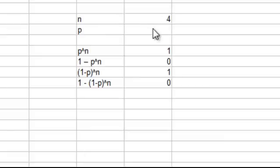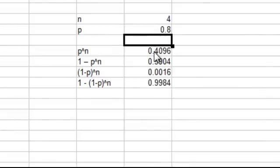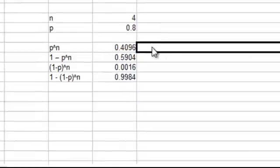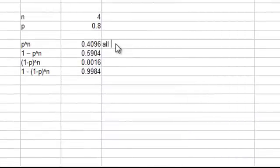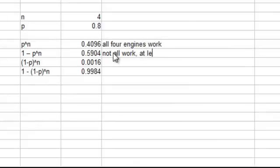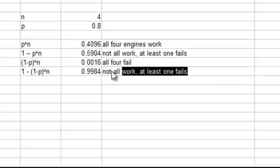So we have four engines. Probability of any engine succeeding is 0.8. And here are all our probabilities. So this is the probability that all four engines work. This is not all work, meaning at least one fails. This is all four fail. And this is not all four fail, so at least one works.